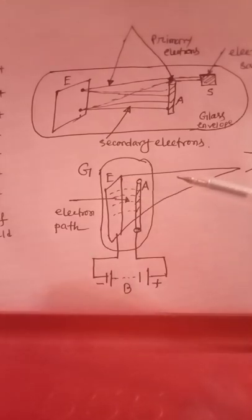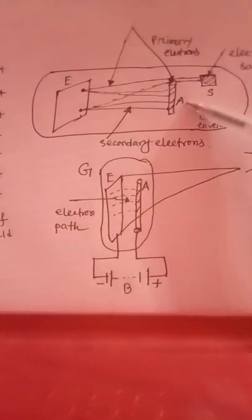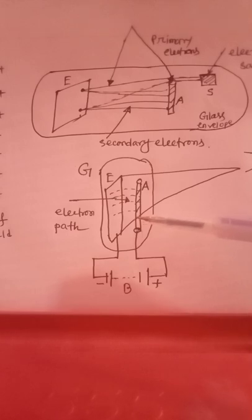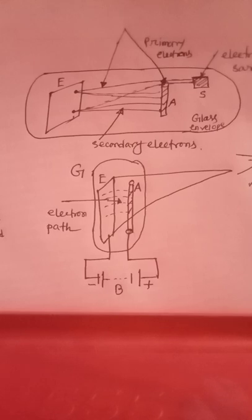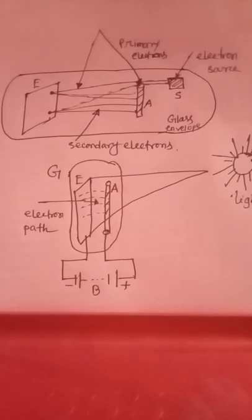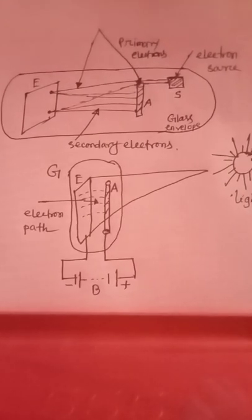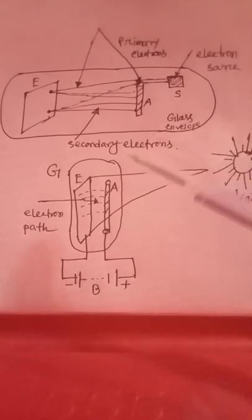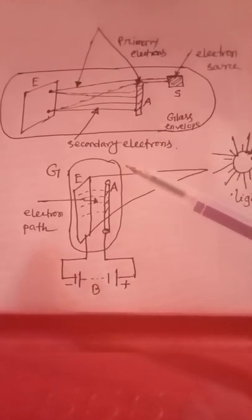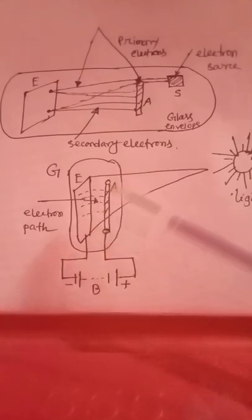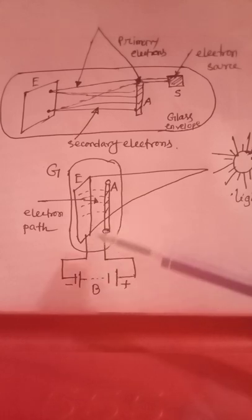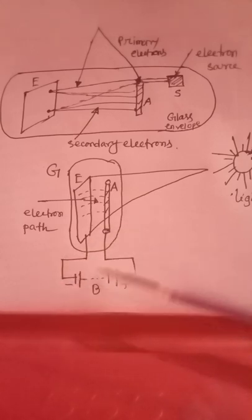The principle of secondary emission: in this figure, an evacuated glass tube contains the emitting surface. The source of primary electrons is the anode, maintained at a positive potential with respect to the emitting surface. We can see the first terminal and second terminal connected to a battery.